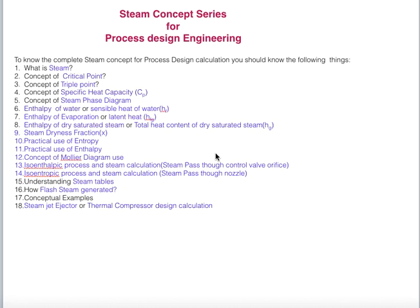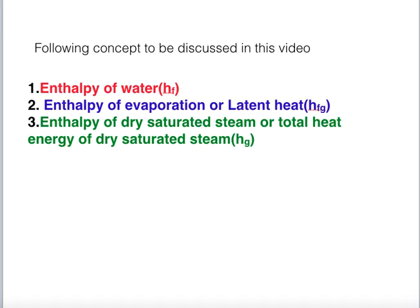Today we will discuss the third video of the steam concept series. In this video we discuss topics six, seven, and eight. Topics one through five were already discussed in previous videos. The concepts to be covered are: enthalpy of water denoted by HF, enthalpy of evaporation or latent heat denoted by HFG, and enthalpy of dry saturated steam or total heat energy of dry saturated steam denoted by HG.